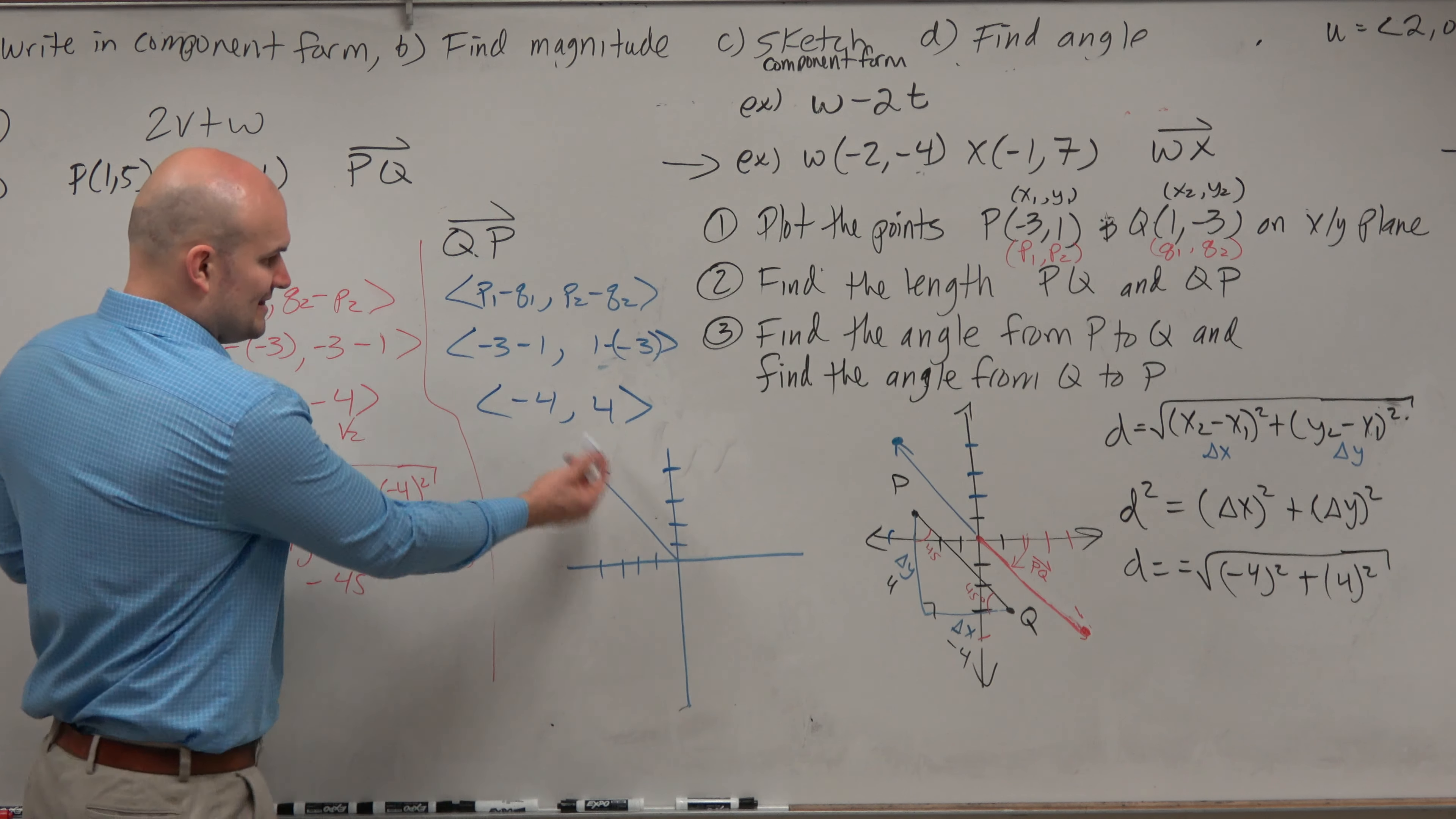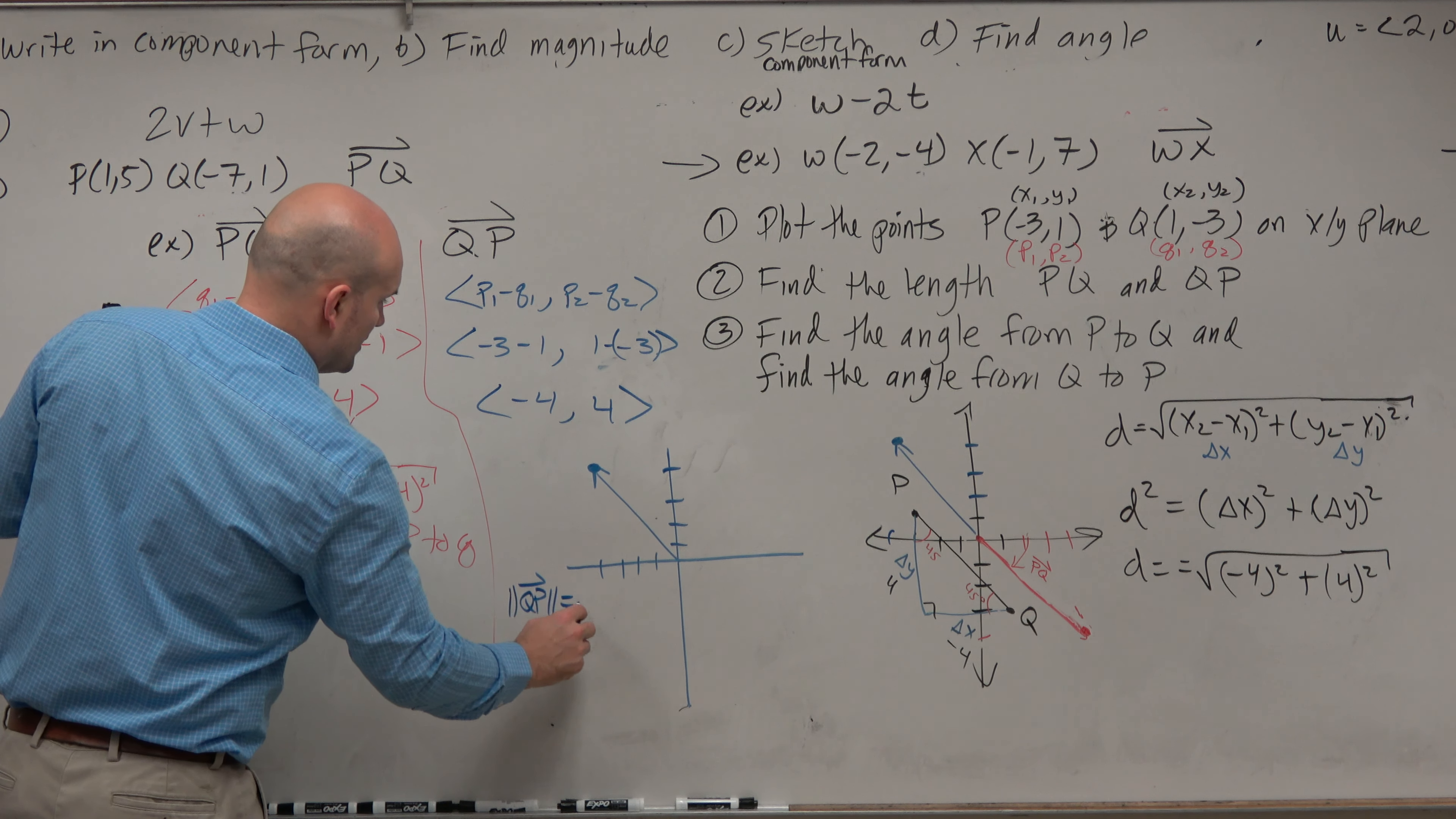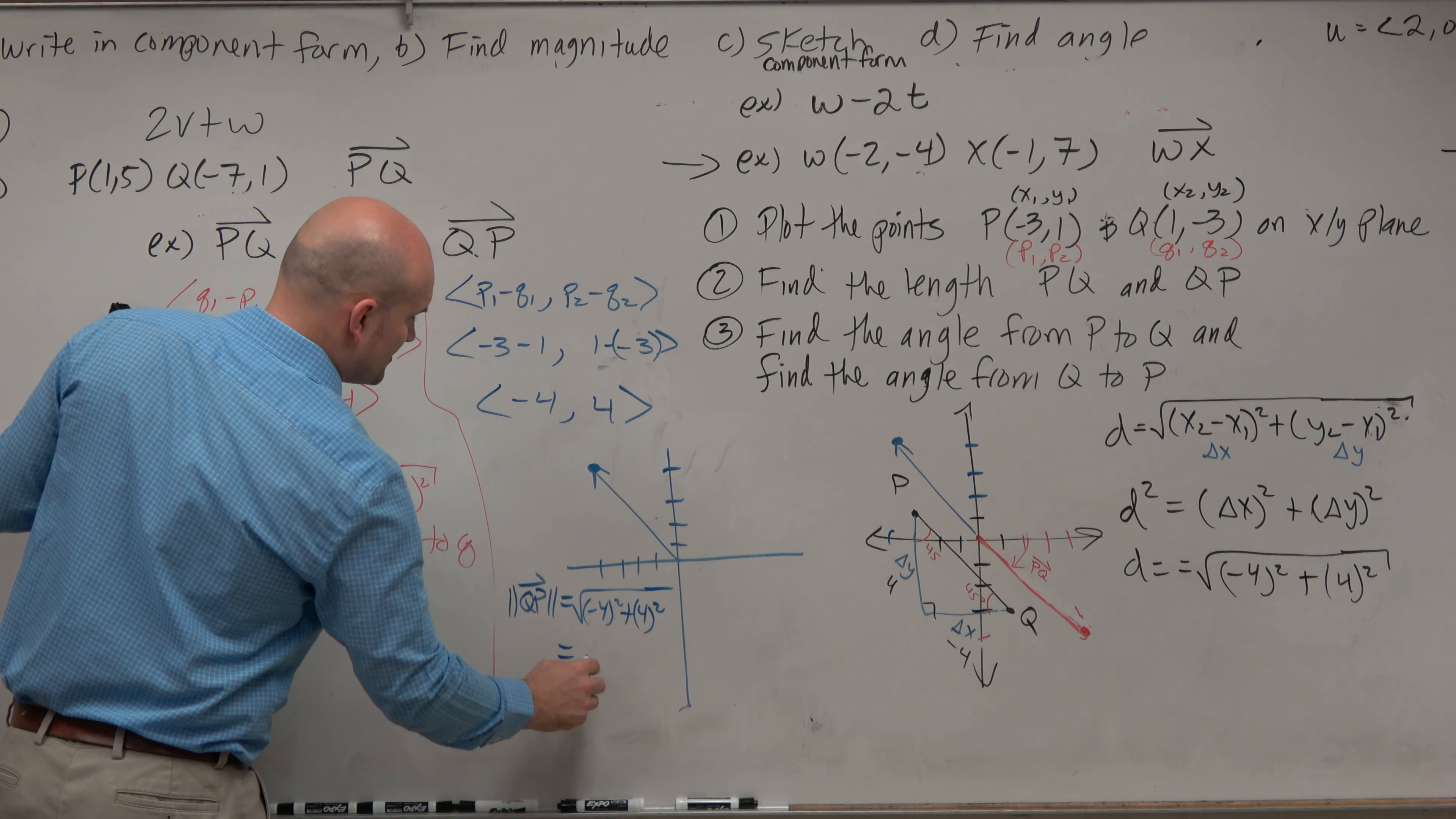Now again, we can find the magnitude, which would be very easy. Right? The magnitude is just going to be, so the magnitude of qp is just going to be negative 4 squared plus 4. Oh, I forgot to even go through this. This should be square root of 32.